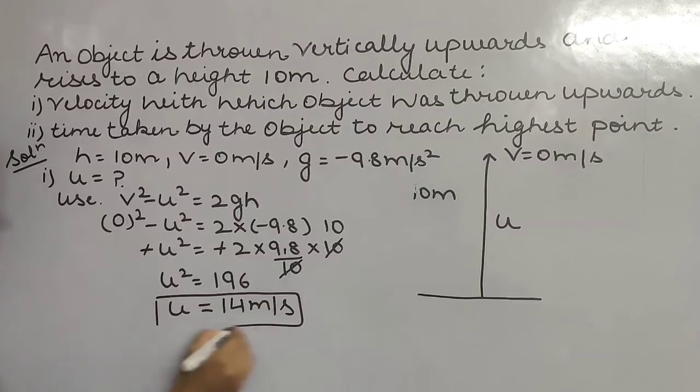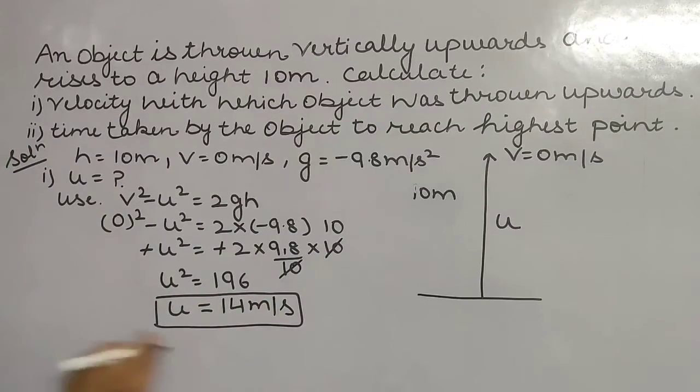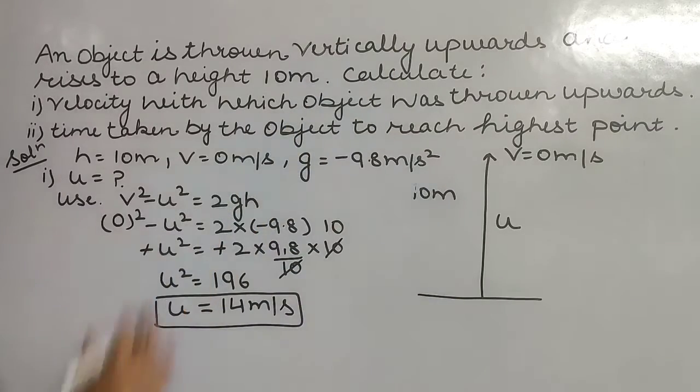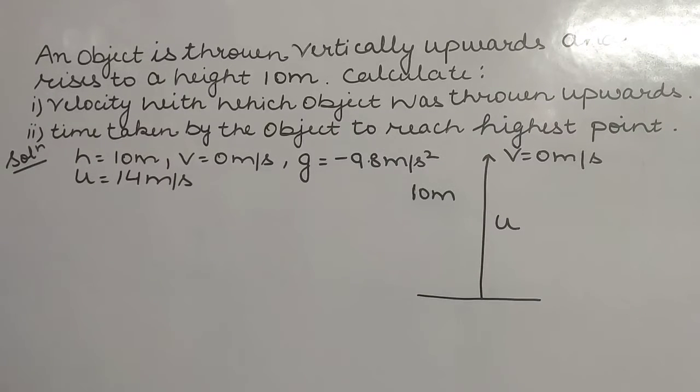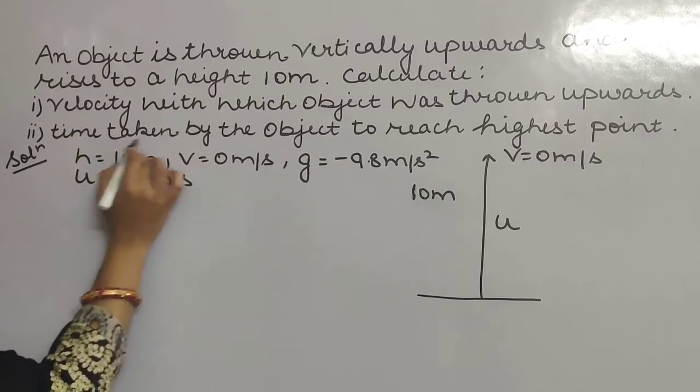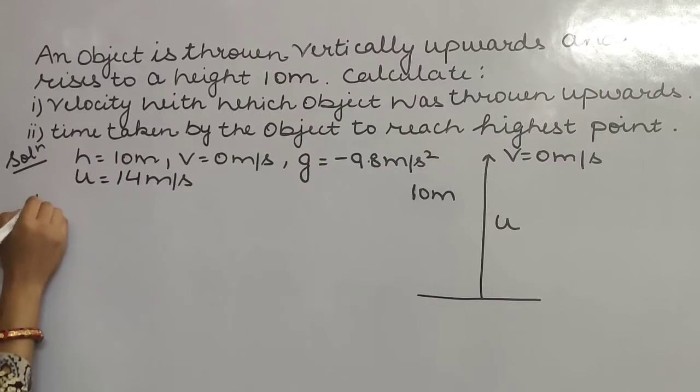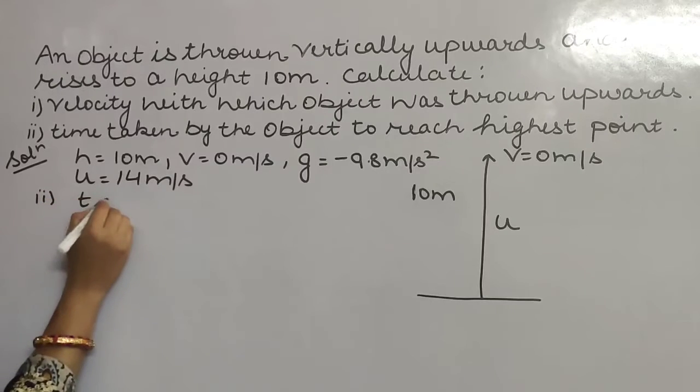So this is the initial velocity with which the object was thrown vertically upwards. Now see the second part: time taken by the object to reach the highest point. Time we have to calculate, so use the first equation of motion: v = u + gt.